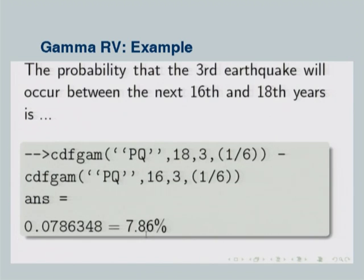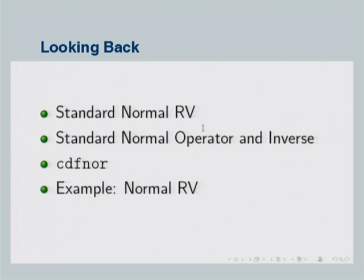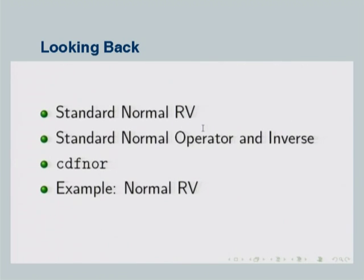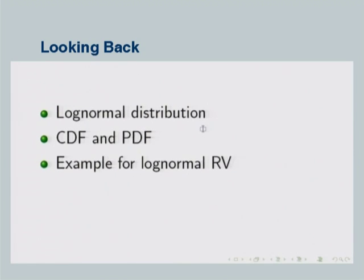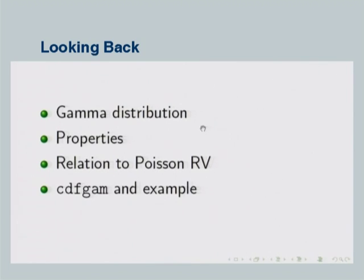To summarize: the Poisson process describes the number of occurrences over time or space (e.g., earthquakes, floods, defective parts), and the time until the kth event follows a gamma distribution. Today we covered the standard normal distribution, the standard normal operator and its inverse, the Scilab cdfnor function, examples with normal random variables, the log-normal distribution and its CDF/PDF, and finally the gamma distribution, its relation to the Poisson process, the Scilab cdfgam function, and a worked example.